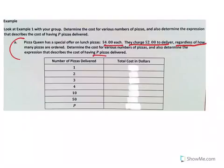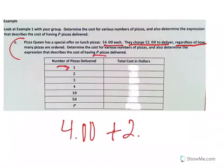Determine the cost for various numbers of pizzas, and also determine the expression that describes the cost of having P pizzas delivered. P representing any number, right? So if you're going to have one pizza delivered, we're looking right here, you know it's going to cost you 4 dollars.